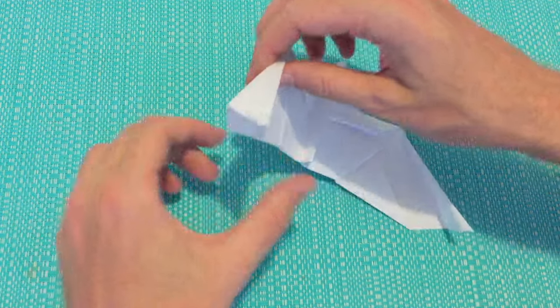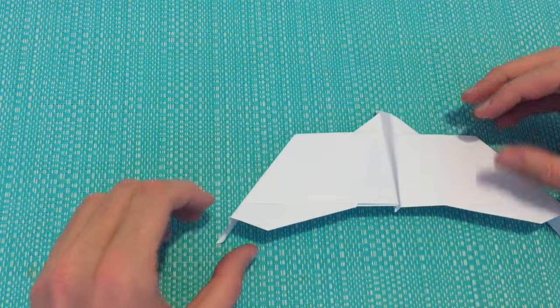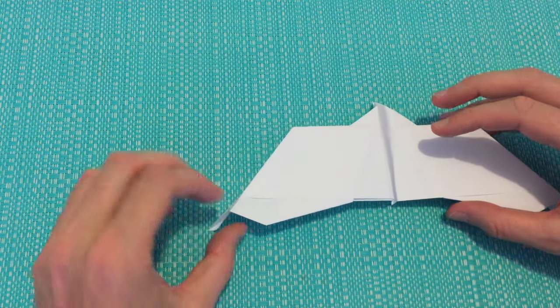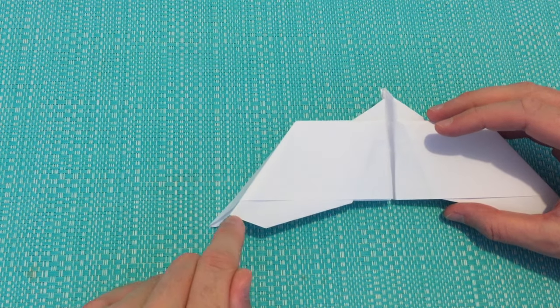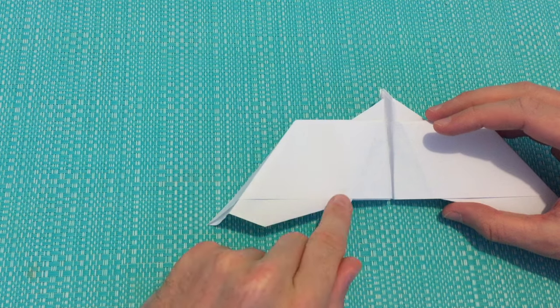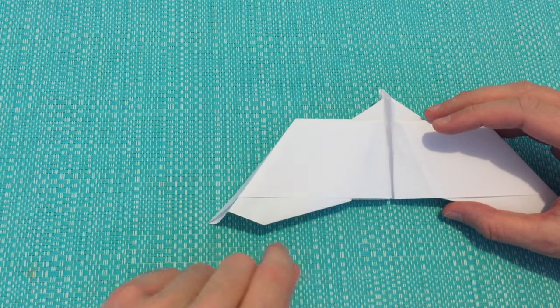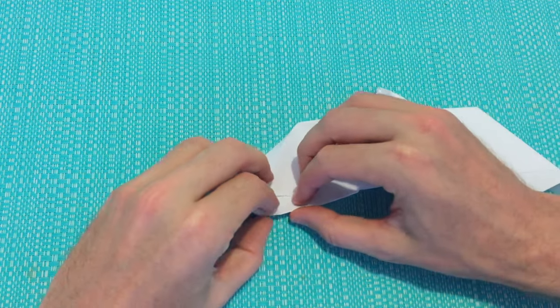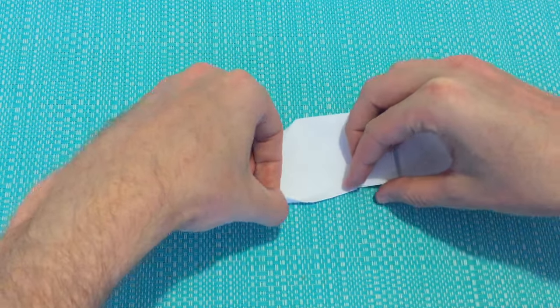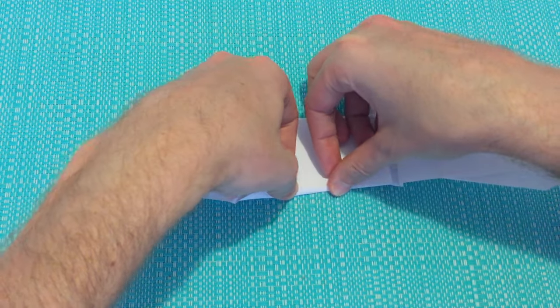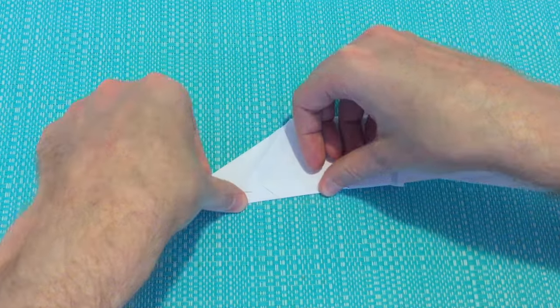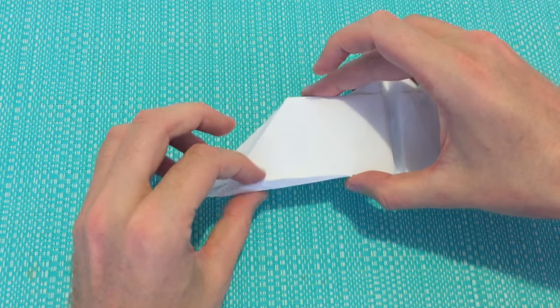Next we're turning the bat plane over. We're just going to be folding up the flaps at the back. So this fold will run from this point here to this point here. Just lift up the flap and create the fold.